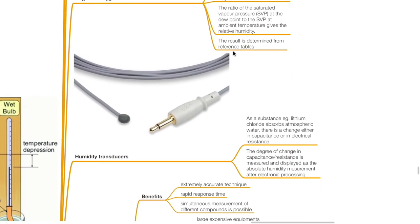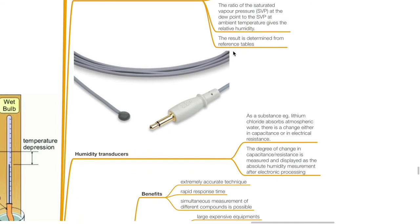Humidity transducers. As a substance such as lithium chloride absorbs atmospheric water, there is a change in either capacitance or electrical resistance. The degree of change in capacitance or resistance is measured and displayed as an absolute humidity measurement after electronic processing.